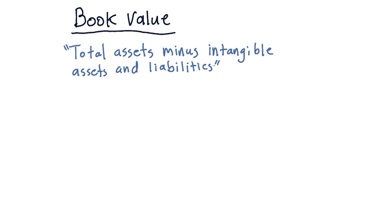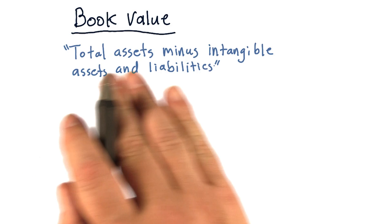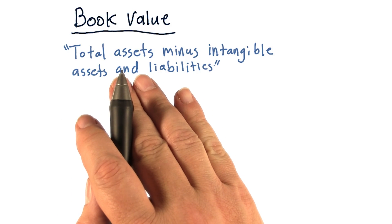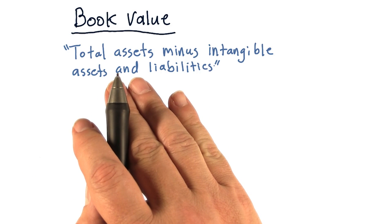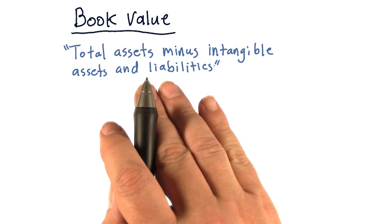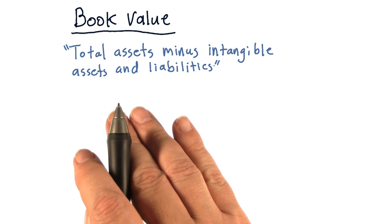Here's a classic definition of book value. It's total assets of the company, in other words, things like property that is owned and so on, minus intangible assets and liabilities.